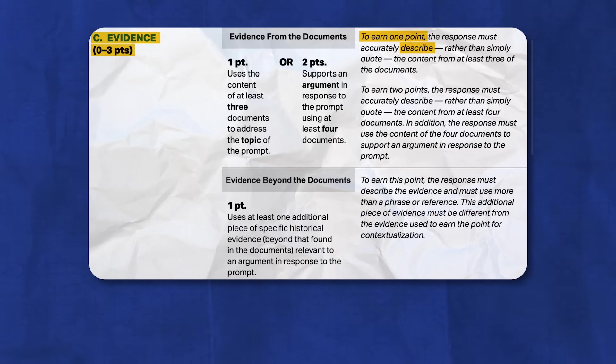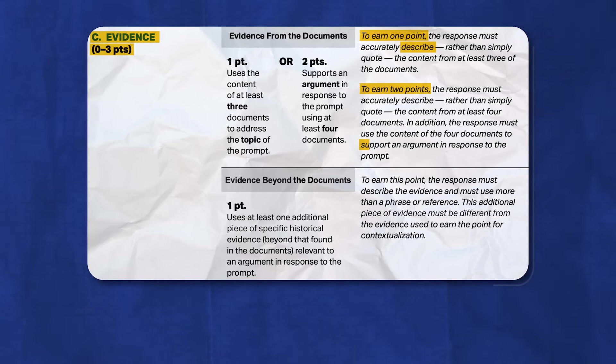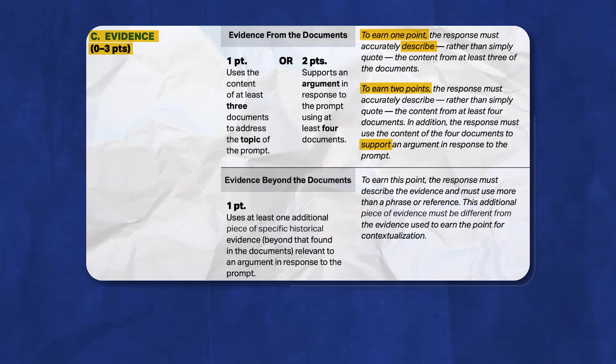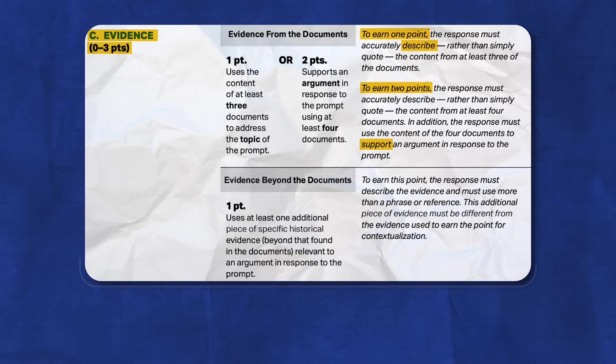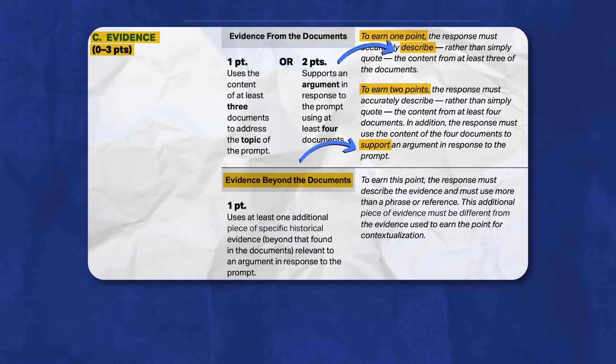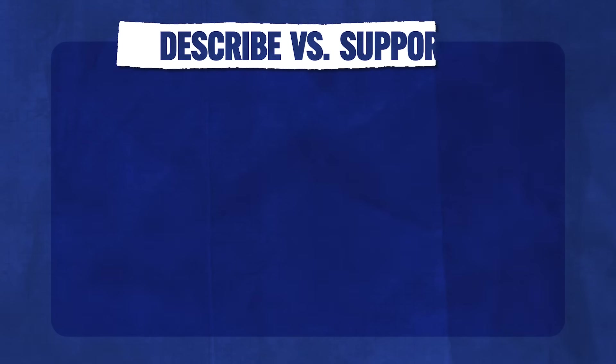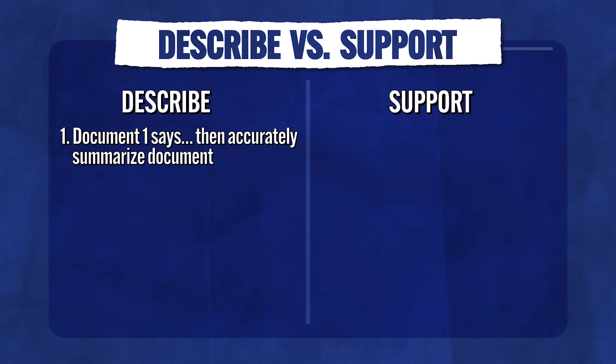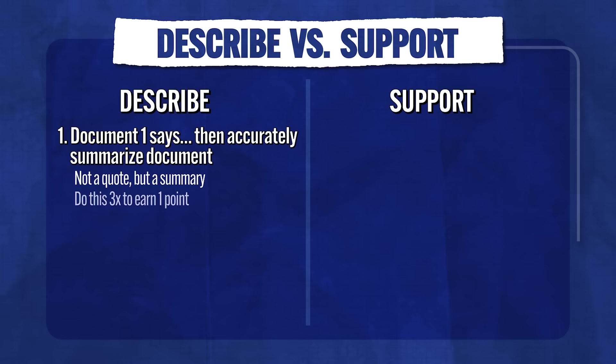Now we get to the evidence section. You'll have seven documents to work with, and you can earn up to three points here. One point is awarded for successfully describing the contents of at least three documents in relation to the prompt. Two points are awarded for supporting your argument with at least four documents. You can earn a remaining one point by writing about evidence related to your prompt but not mentioned in the documents — called 'evidence beyond the documents.' So two points for the documents and one point for evidence beyond the documents, for a total of three points. Describing a document gets you one point; using documents to support an argument gets you two.